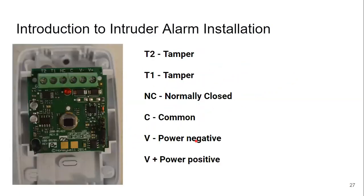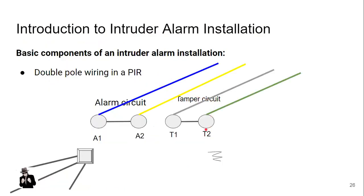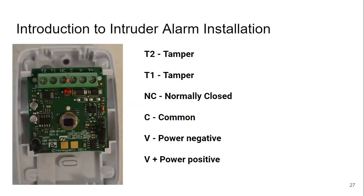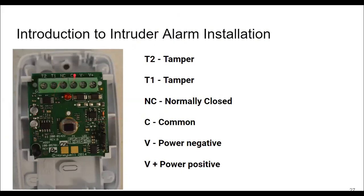Looking at a basic Honeywell PAR, you've got terminals: T2 and D1 are your alarm circuit, NC and C are your alarm relay circuit. NC stands for normally closed, and C stands for common. Then you've got V minus and V plus — that's your 12V DC power. Most devices work with 12 volt. That's your sensor part which detects movement.